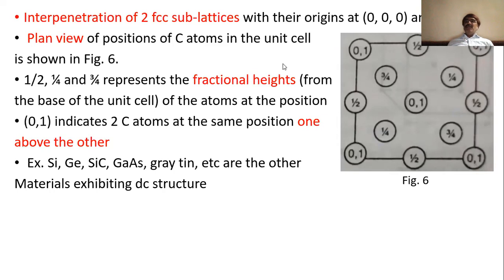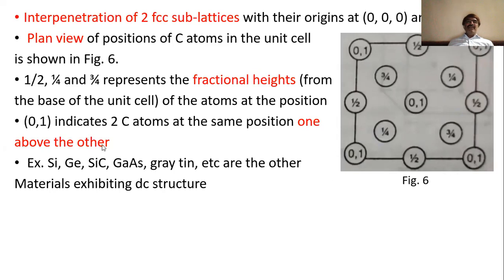In the plan view of carbon atoms in the unit cell, the fractional heights 1/2, 3/4, and 1/4 represent the heights of atoms from the base of the unit cell. The notation '0, 1' indicates two carbon atoms at the same position, one above the other.